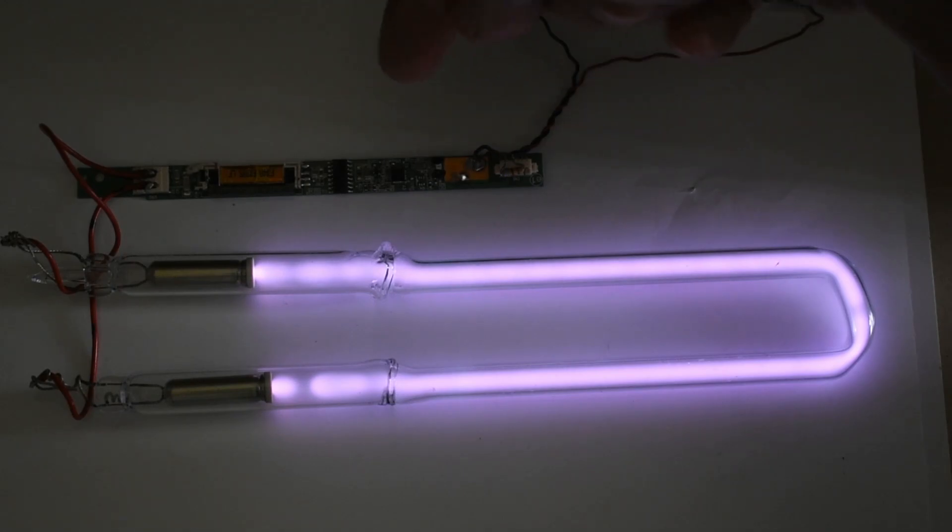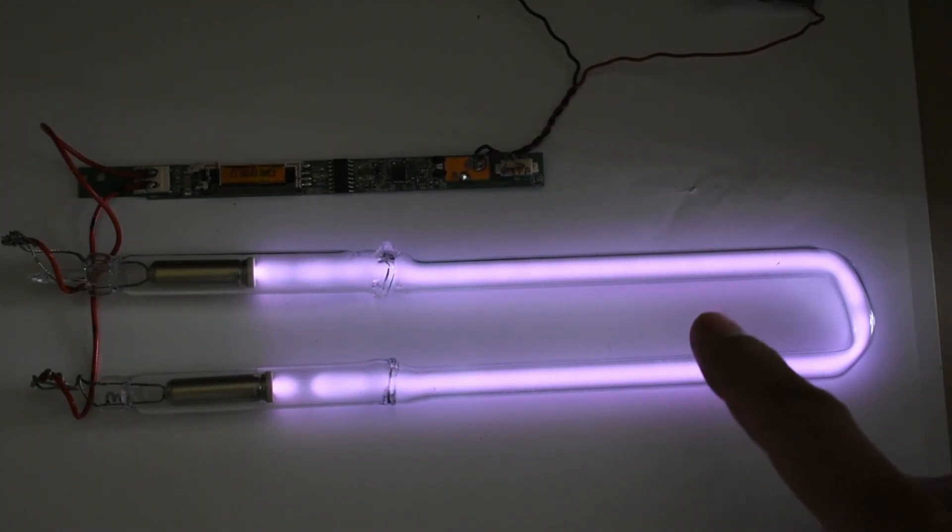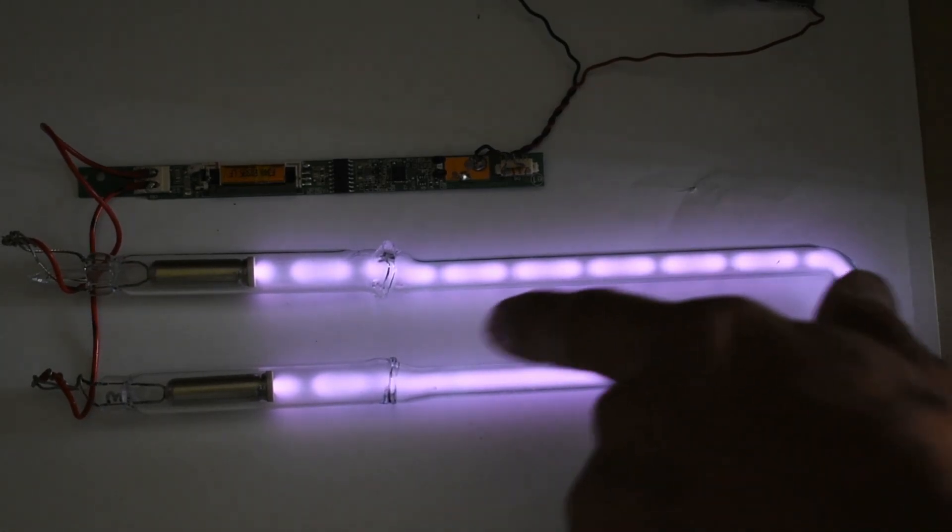Now what's interesting is that this is running at a high frequency and if I touch the tube I'll load it slightly by parasitic capacitance, but you see the striations appearing.